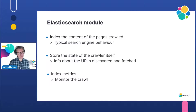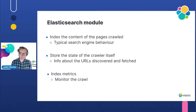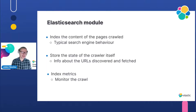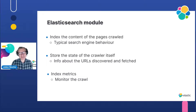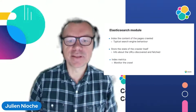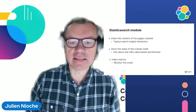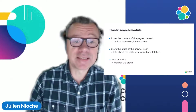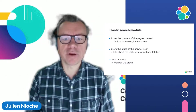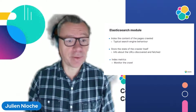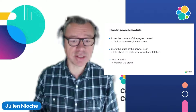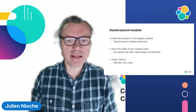I mentioned earlier that it is modular, and there is of course an Elasticsearch module for it, which gives you three things. First, it provides the components that allow you to index the content of a web page into Elasticsearch, giving you typical search engine behavior where you can enter a query and see documents containing the terms. But it does other things as well — it leverages the Elastic stack itself. It also uses a different type of Elasticsearch index called the status index, which is used to store the state of the crawler itself: all the information about its URLs, the things it has discovered, the pages just fetched, and so on, stored in an index in Elasticsearch.